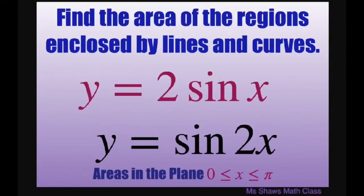Hi everyone. We're going to find the area of the regions enclosed by lines and curves. In this case we have two curves: y equals 2 sine x and y equals sine 2x. We're restricted to 0 to 2 pi here.